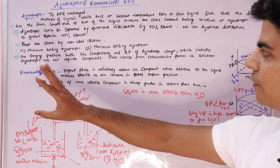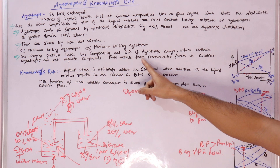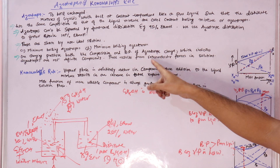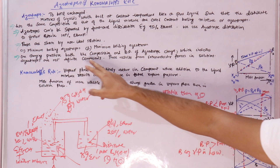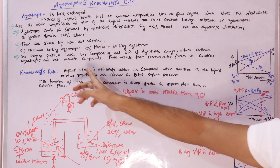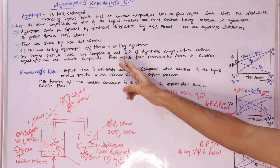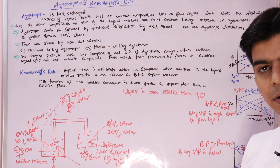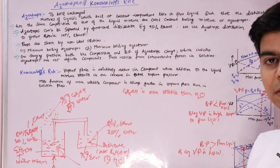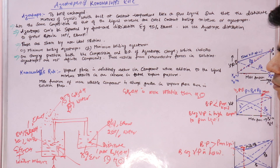When you change the pressure of azeotropes, both the composition and boiling point can change, which indicates that azeotropes are not definite compounds. With an increase or decrease in pressure, the boiling point and composition will both change.